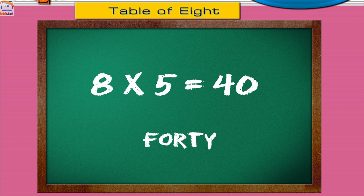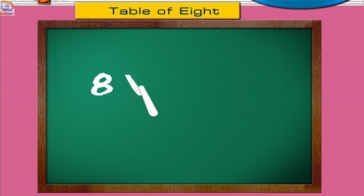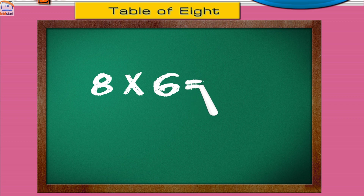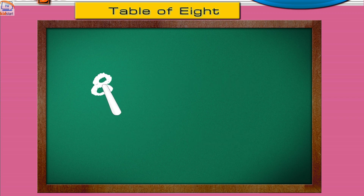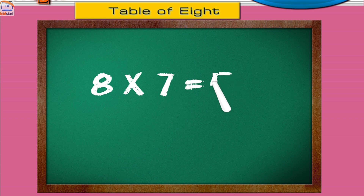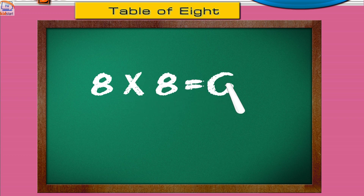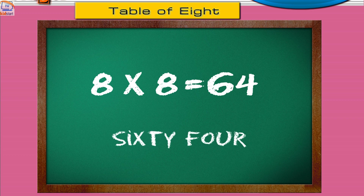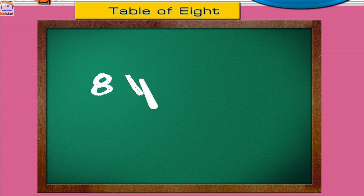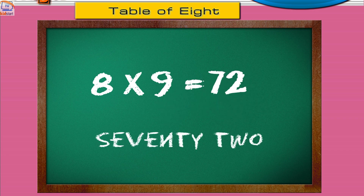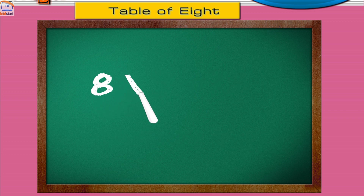Eight sixes are forty-eight. Eight sevens are fifty-six. Eight eights are sixty-four. Eight nines are seventy-two. Eight tens are eighty.